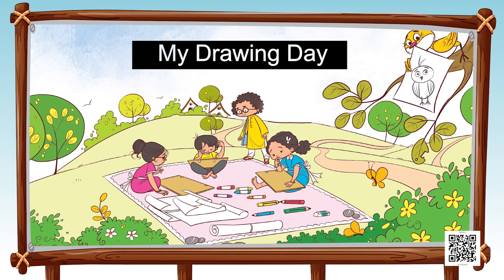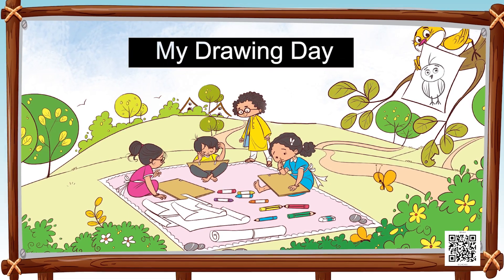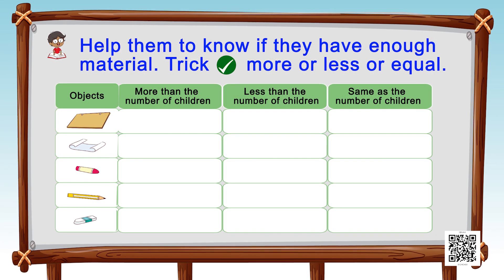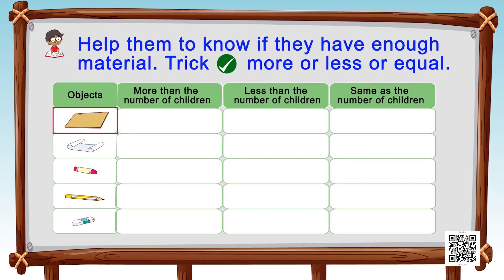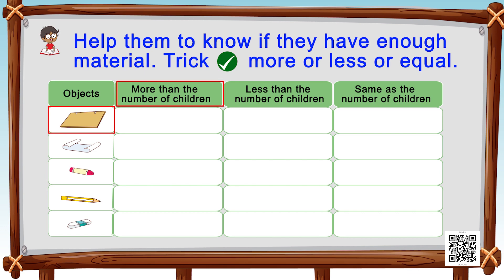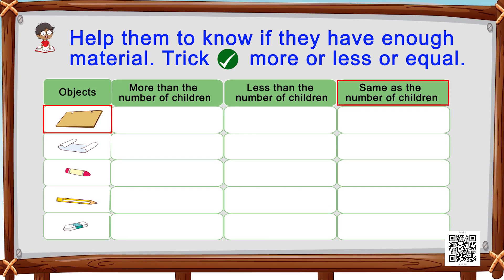As you can see in this activity, each child has some objects in his hands and in front of them. Let's count the objects and help them know if they have enough material. The first object is a cardboard. Let's count and see if it's more than, less than, or the same as the number of children.